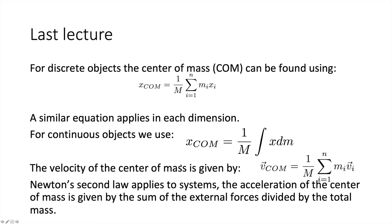The velocity of the centre of mass is given by 1 over m times the sum of the masses multiplied by the velocities of each of the particles. Newton's second law also applies to systems: the acceleration of the centre of mass is given by the sum of the external forces divided by the total mass. So if there are no external forces acting upon the system, then the acceleration of the centre of mass is zero.